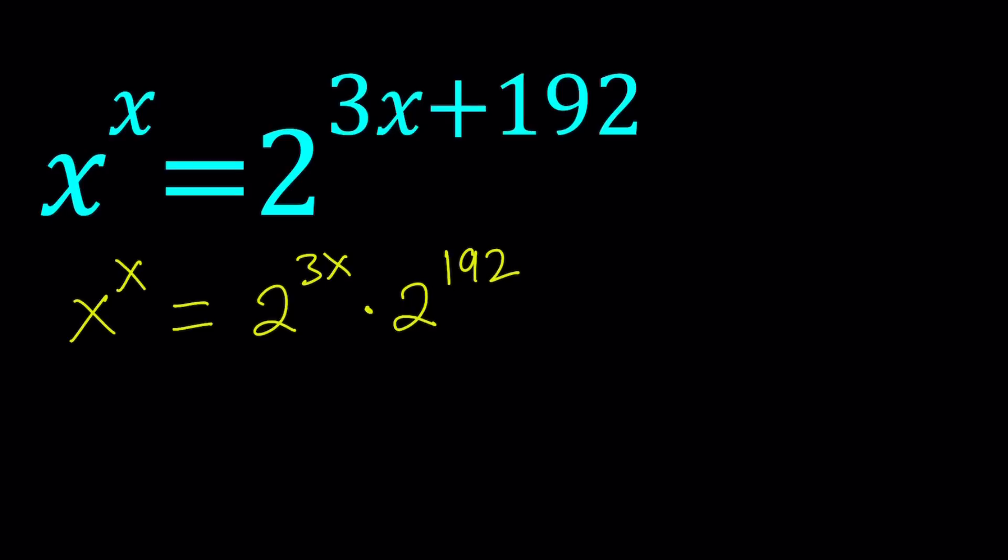We're able to do that because if you have something like a to the power b times a to the power c, that equals a to the power b plus c. So when the exponents are added, you can write it as a product.